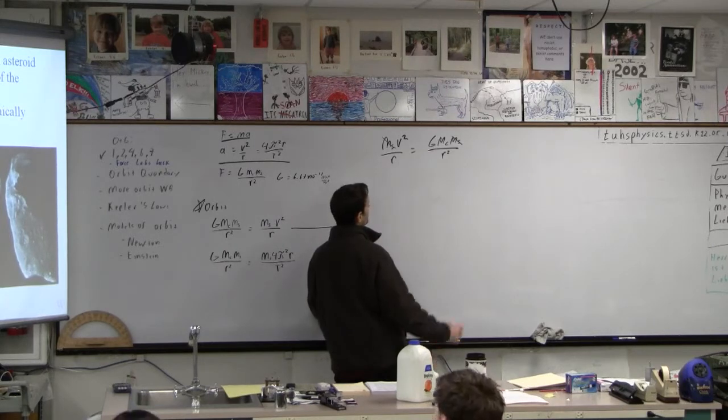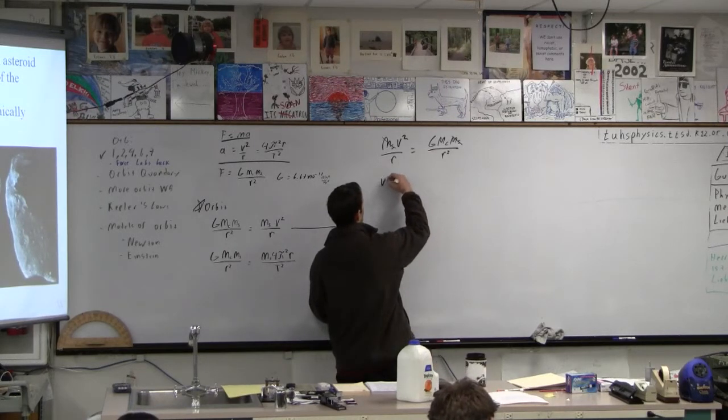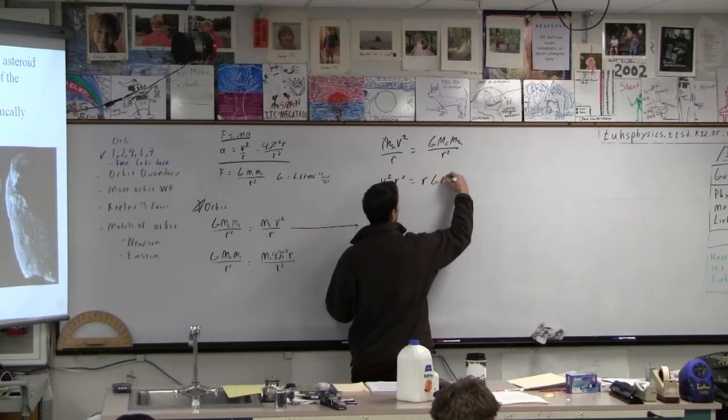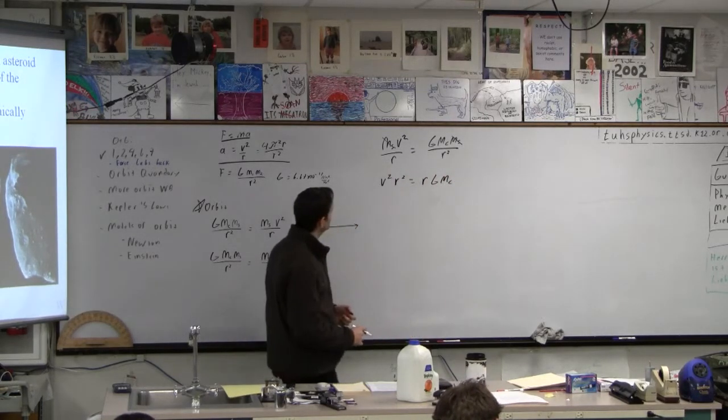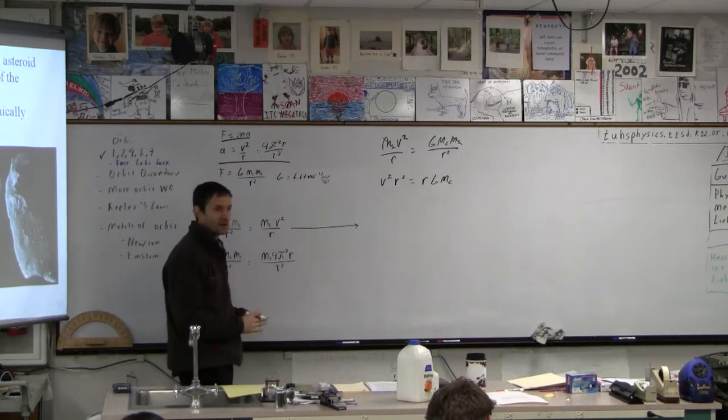Do we, I don't know, cross multiply? I think so, yeah. v squared r squared is r g mc. We don't think too hard. It's just algebra, right?